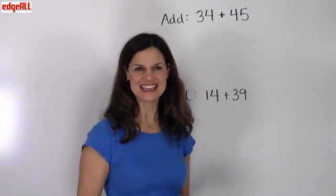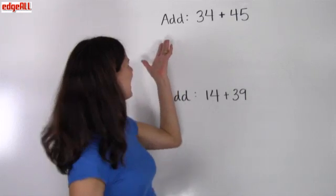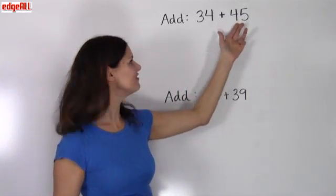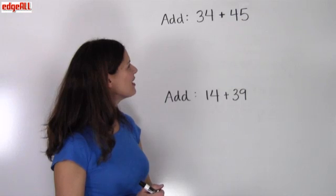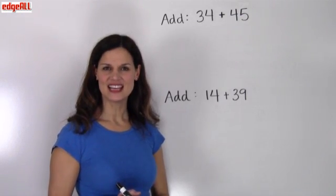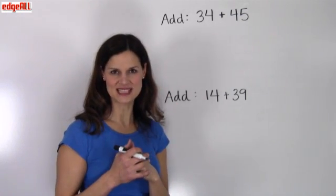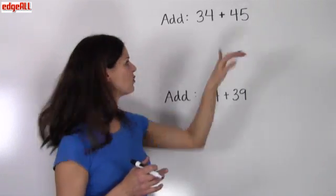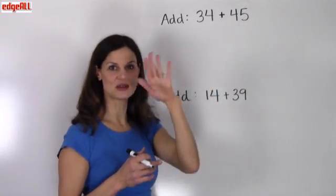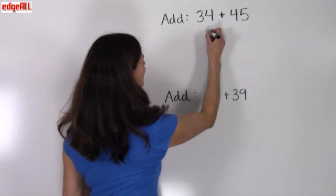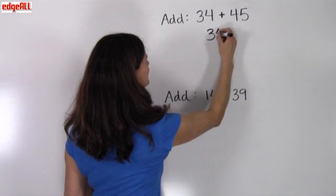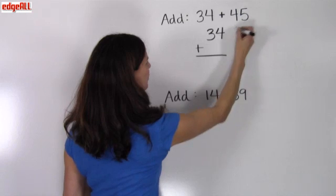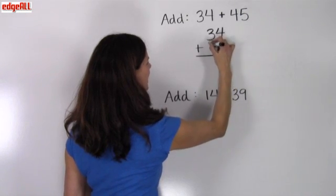Let's look at adding some numbers together. We've got 34 plus 45. What we want to do, first of all, is line our numbers up vertically, and we always want to line up the rightmost digits with one another. So I've got my 34 first, and then I'm going to add and line up the 45 right below it.